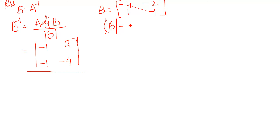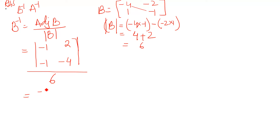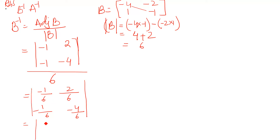The determinant of B: (-4)×(-1) minus (-2)×1 = 4 + 2 = 6. So B inverse equals (1/6) times the adjoint: [-1/6, 1/3; -2/3, -1/6]. This is B inverse.